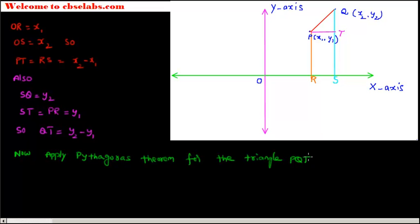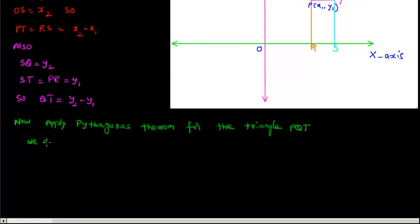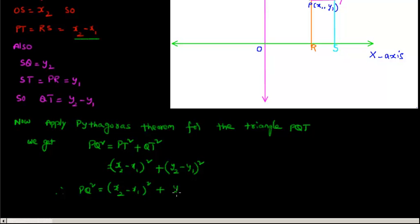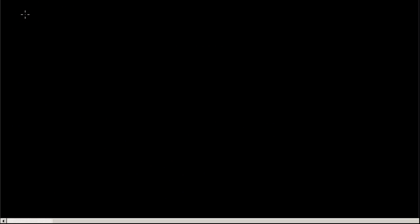Now apply the Pythagorean theorem for triangle PQT. We get PQ squared equals PT squared plus QT squared. Since PT equals x2 minus x1 and QT equals y2 minus y1, we have PQ squared equals (x2 minus x1) whole square plus (y2 minus y1) whole square. Therefore the distance PQ equals the square root of (x2 minus x1) squared plus (y2 minus y1) squared.